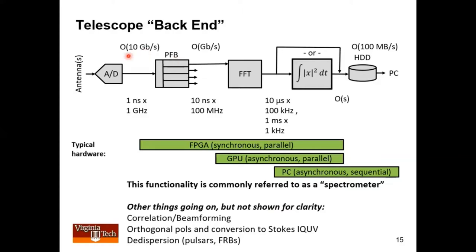Digitizer running at gigasamples per second are routine, perhaps ubiquitous. That gives you a time frequency resolution of something like one nanosecond or one gigahertz.